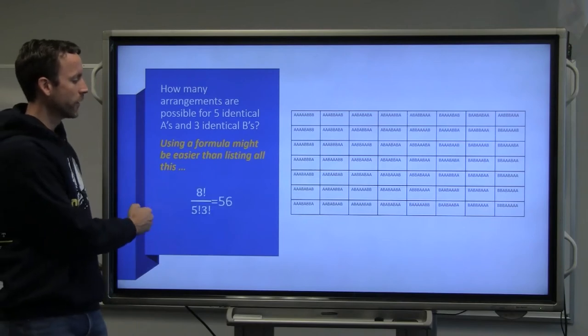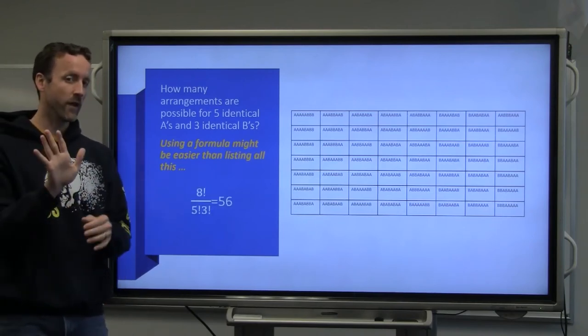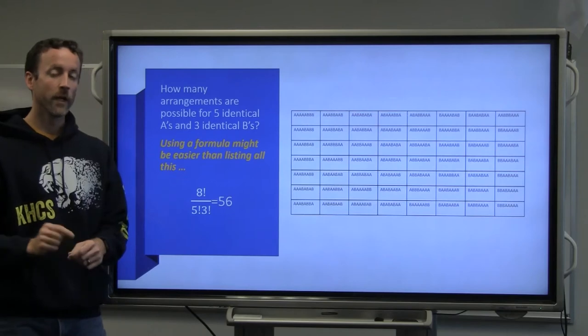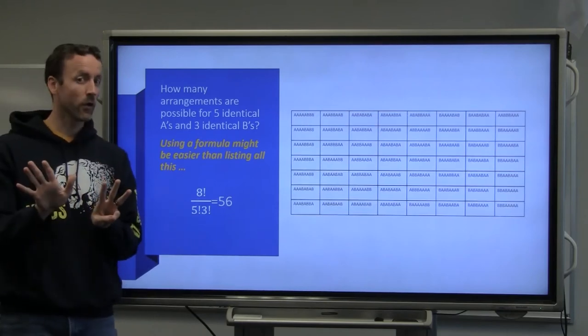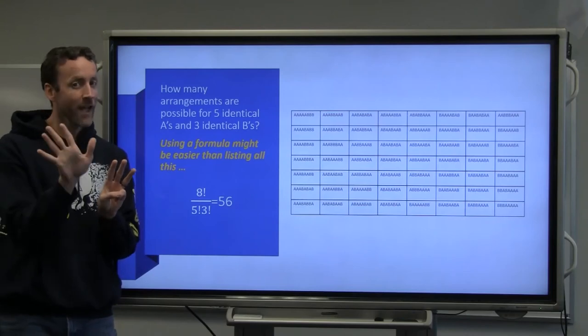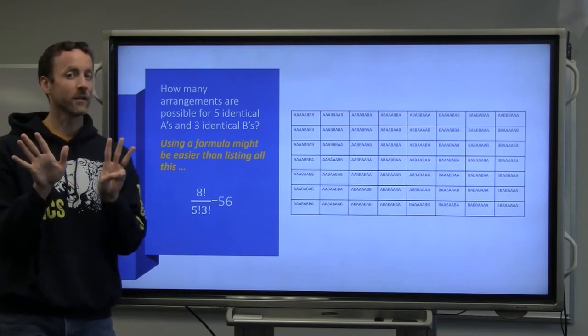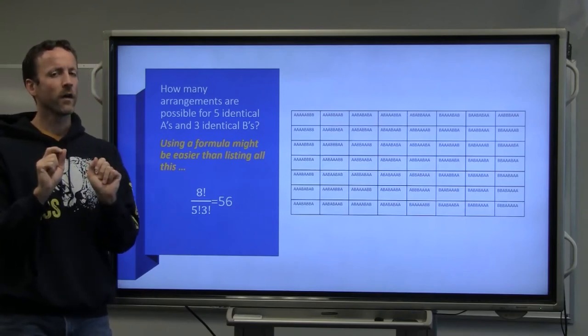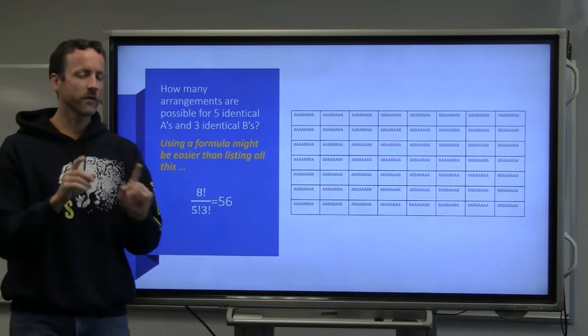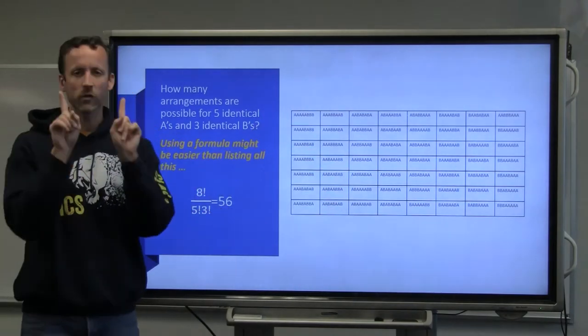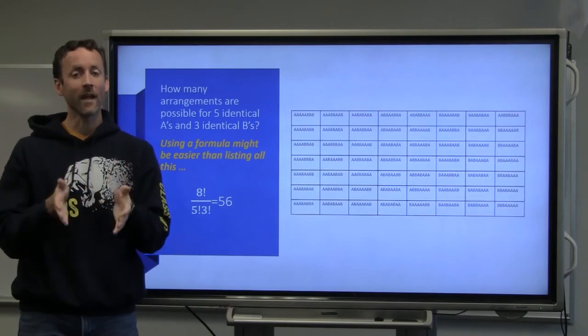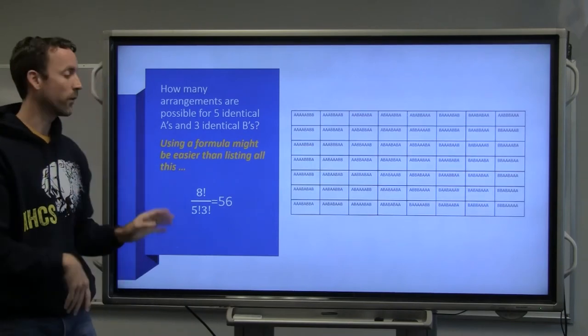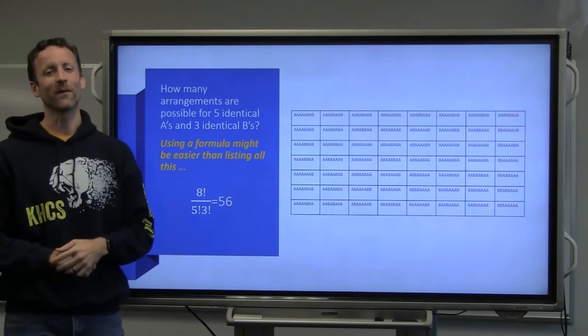Here's the formula. Notice we have eight objects. There's five A's and three B's. So you start off with eight factorial divided by five factorial and three factorial, because there are five identical A's and three identical B's. Now, we are using this formula because in any of these arrangements, if you switch two A's or switch two B's, you would get the exact same arrangement. So that's why we are dividing by five factorial and three factorial.